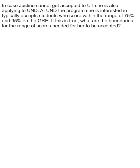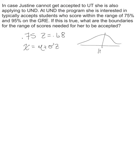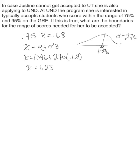For the lower limit at 0.75, Z = 0.68. Using X equals mu plus standard deviation times Z: 1046 plus 270 times 0.68 equals 1046 plus 183.6, giving a raw score of approximately 1,230. That's the lowest score she can get and still be accepted.